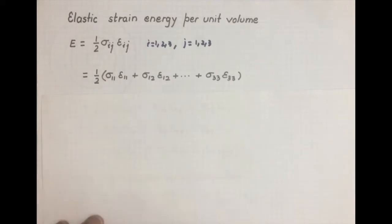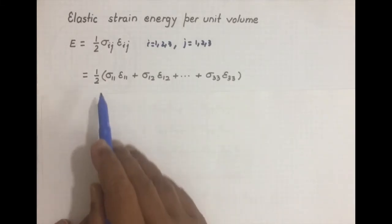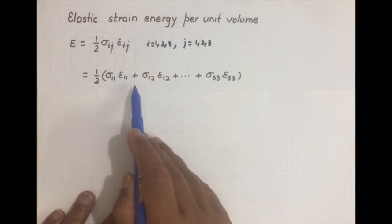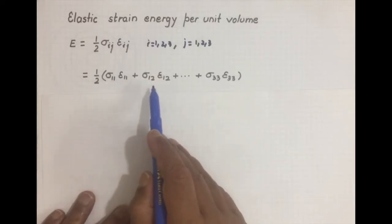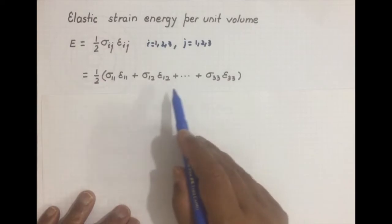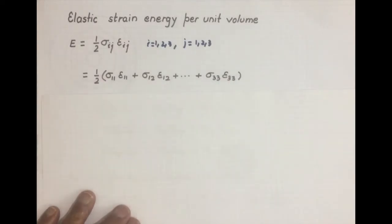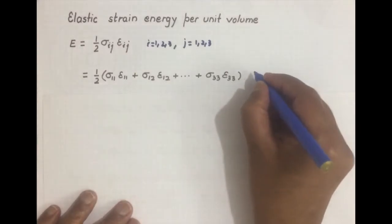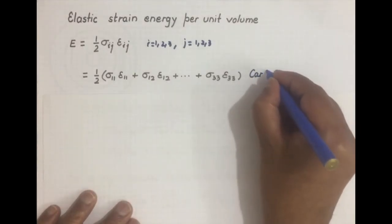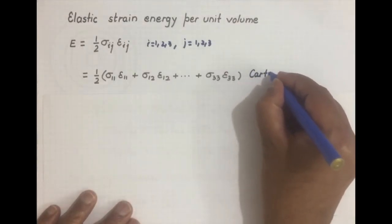If we write out those 9 terms, it will be like: (1/2)(σ₁₁ε₁₁ + σ₁₂ε₁₂ + ... + σ₃₃ε₃₃). These are the 9 terms in a Cartesian coordinate system.